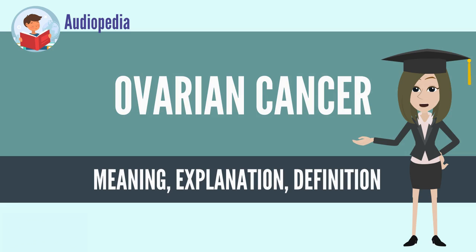In 2012, new cases occurred in 239,000 women. In 2015, it was present in 1.2 million women and resulted in 161,100 deaths worldwide. Among women, it is the seventh most common cancer and the eighth most common cause of death from cancer. The typical age of diagnosis is 63. Death from ovarian cancer is more common in North America and Europe than in Africa and Asia.